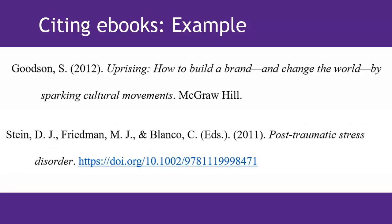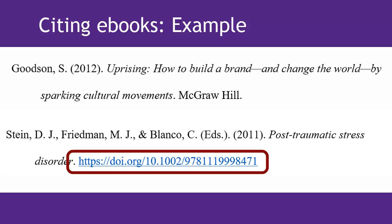Here's a quick example of an ebook which does have a DOI. Notice the formatting — DOIs are often formatted differently on the source itself, but APA says to make them into a functioning link by adding https://doi.org/ before the numbers.